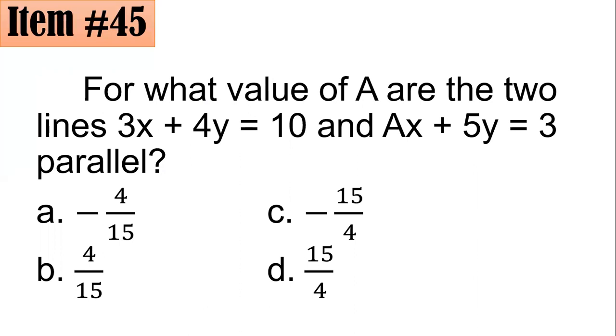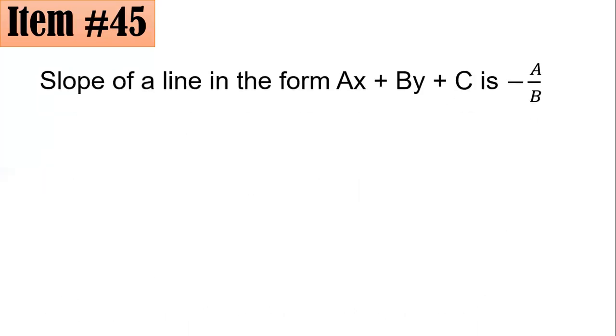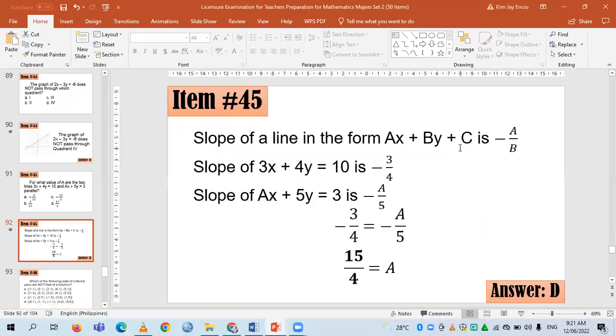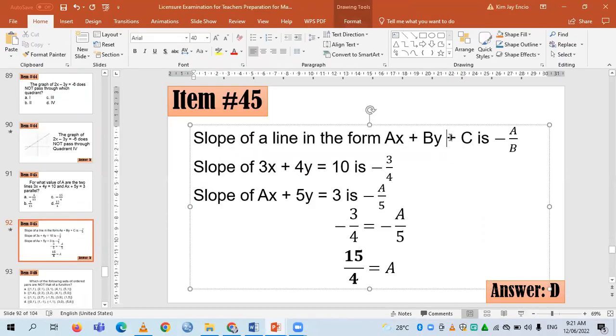So for here, remember that two lines are parallel if they have the same slope but different y-intercepts. Remember that the slope of the line in the form ax + by + c = 0, or even in standard form, is negative a over b.